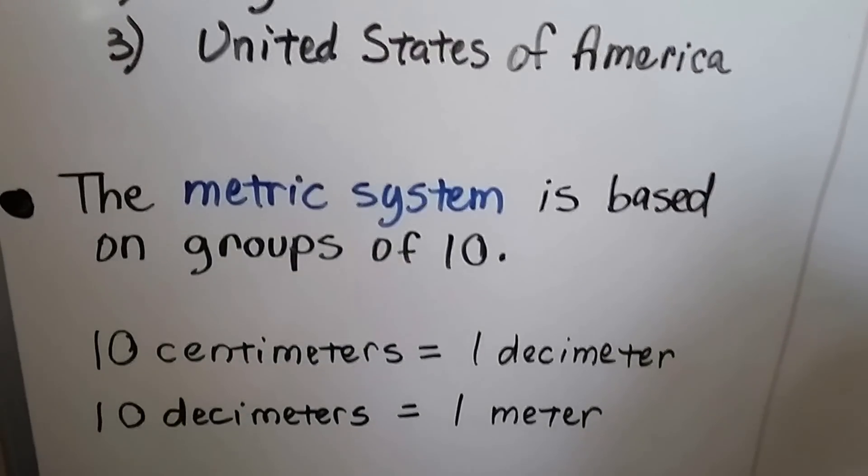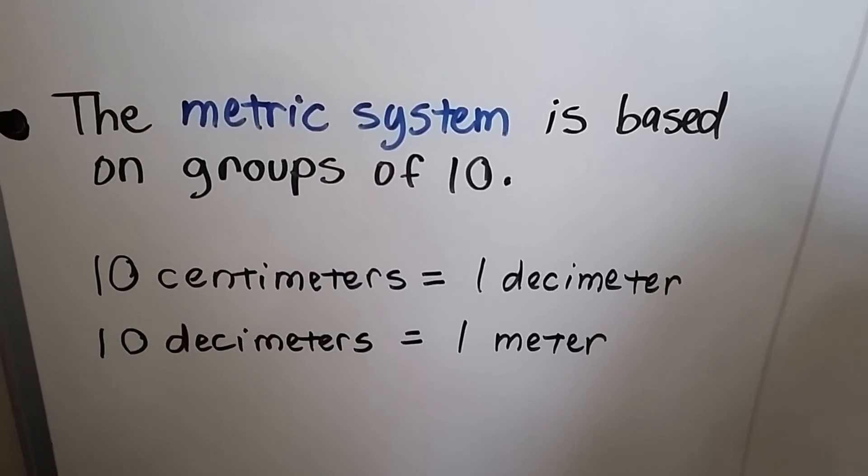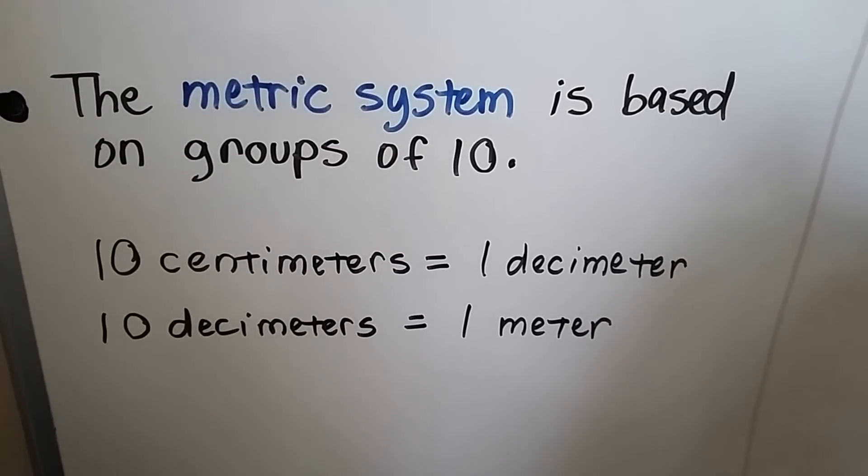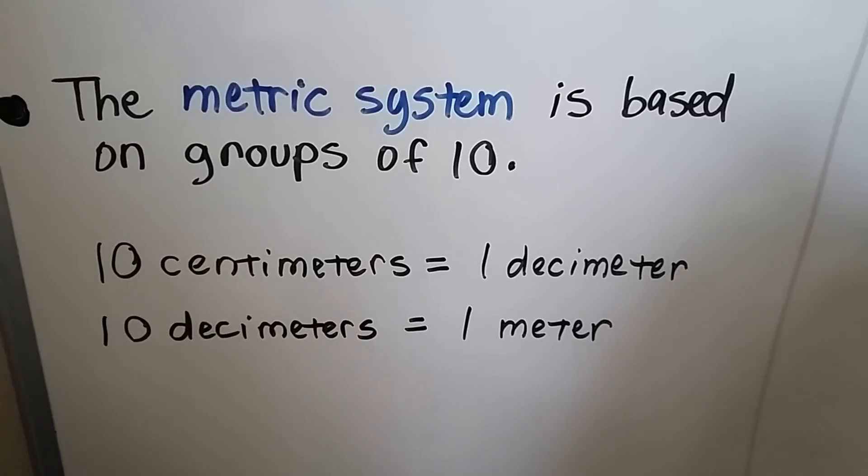The metric system is based on groups of 10. Ten centimeters equals one decimeter. Ten decimeters equals one meter.